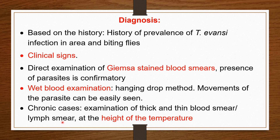A limb smear may also be used. This blood smear or limb smear is taken at the height of temperature, because at other times the parasitemia is very less. But at the height of temperature, parasitemia is more, so generally samples are collected at the height of temperature to give a precise diagnosis.